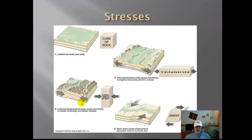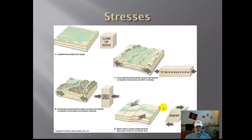This last type is shear. Shear is really a transform fault — we talked about the San Andreas fault. You're not lengthening, you're not shortening the crust; you're moving the crust back and forth against each other.